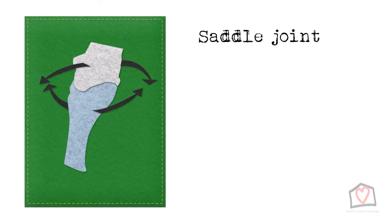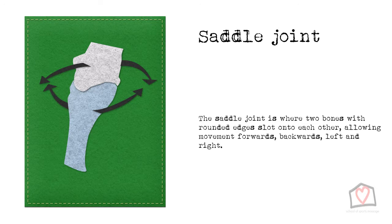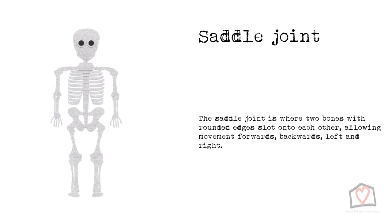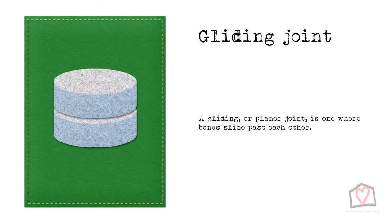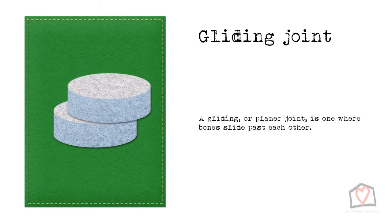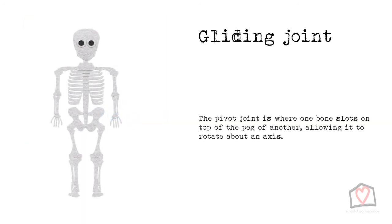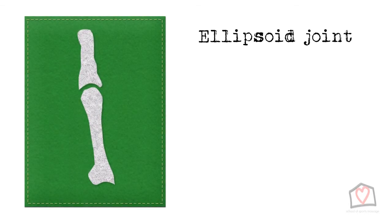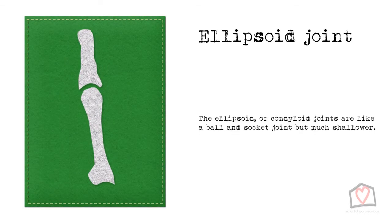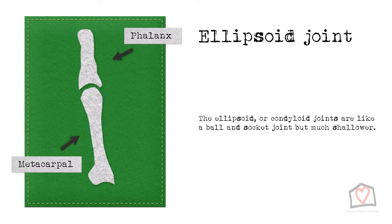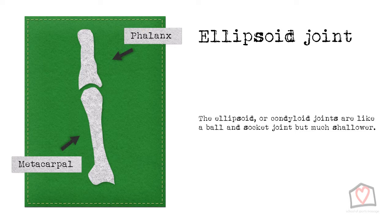The base of your thumb comprises the next type of joint, the saddle, where two bones with rounded edges slot onto each other, allowing movement forwards and backwards and left and right, as if you were sat on a horse or bicycle. A gliding or planar joint is one whereby bones slide past each other — the acromioclavicular joint, mid-tarsal, and carpal joints are classic examples. The final joint type are ellipsoid or condyloid joints, similar to ball and socket but much shallower, allowing quite a lot of movement but nothing like as much. The knuckles — more correctly the metacarpal phalangeal joints — are good examples here.